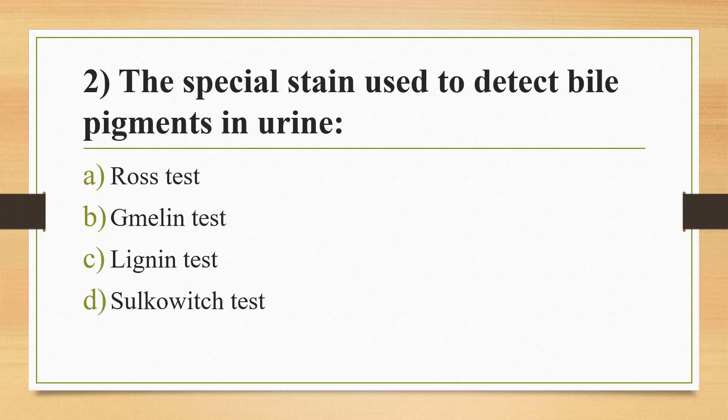Second question: The special stain used to detect bile pigments in urine. Option A: Rose test. Option B: Gmelin test. Option C: Lignin test. Option D: Sulkovich test. Answer is Option B, Gmelin test. Other tests for bile pigment detection in urine are Fouche's test and Form test.